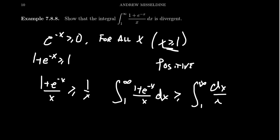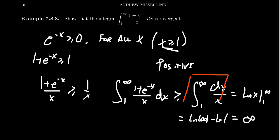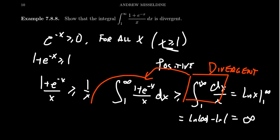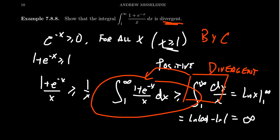We saw this one on a previous slide: the integral from one to infinity of dx over x gives us the natural log of x evaluated from one to infinity. This gives us the natural log of infinity minus the natural log of one, which ends up being infinity itself. So the smaller integral turned out to be divergent. And if the smaller integral is divergent — meaning it's infinite — that then implies the larger one is likewise divergent. And therefore this integral is divergent by the comparison test.